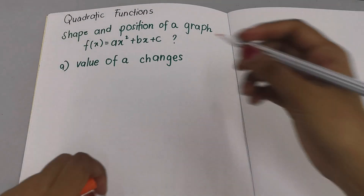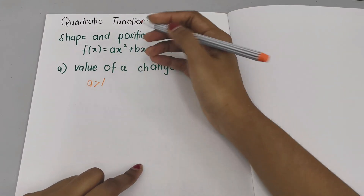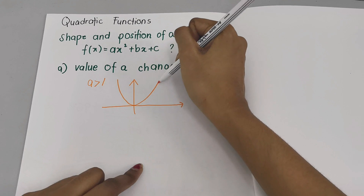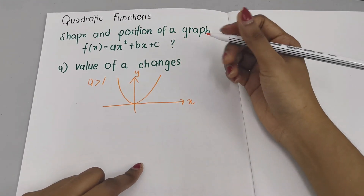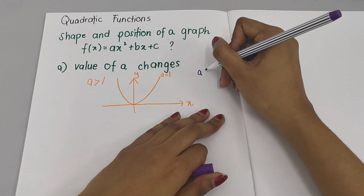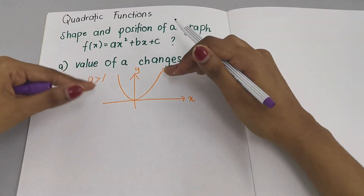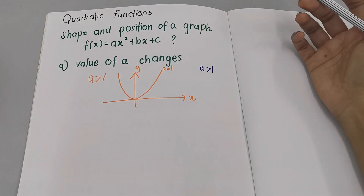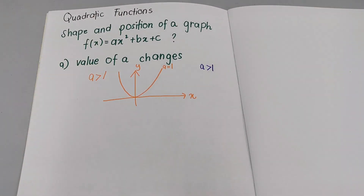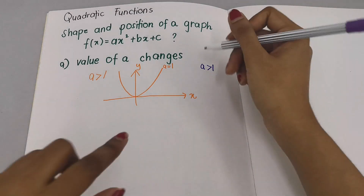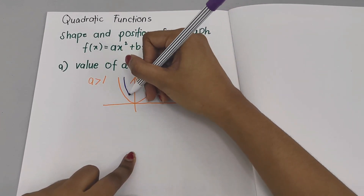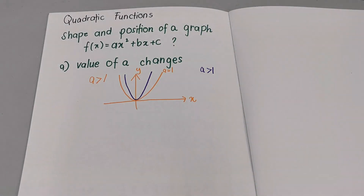First, we know that if it's a positive graph, when your A is greater than 1, your graph will look like this. So let's say A equals 1 — it will be a positive graph. Now what happens if suddenly your A becomes greater than 1? What you need to know is the graph shape changes. When A is greater than 1, meaning let's say 2, 3, or 4, the shape becomes smaller.